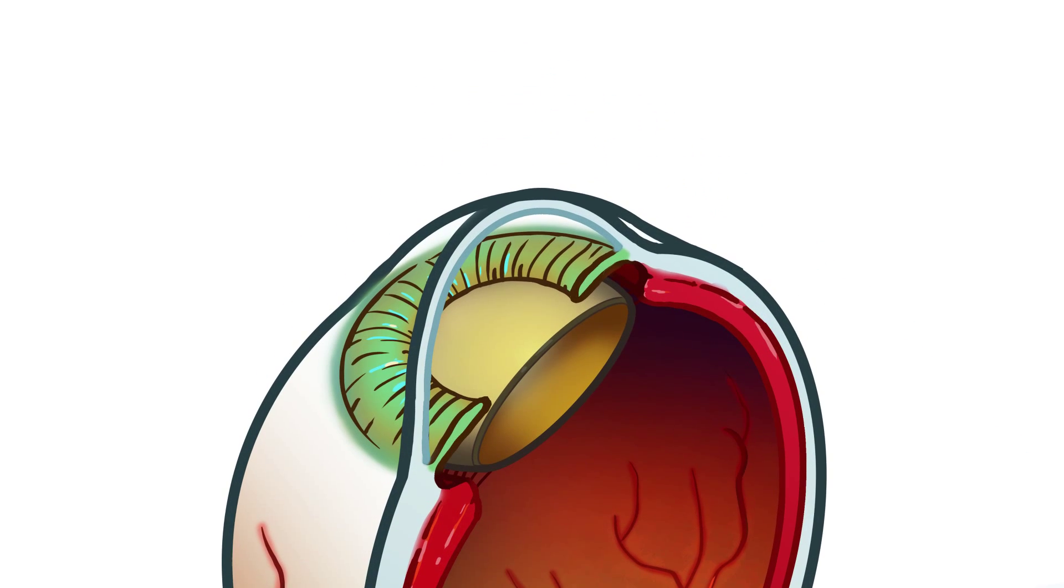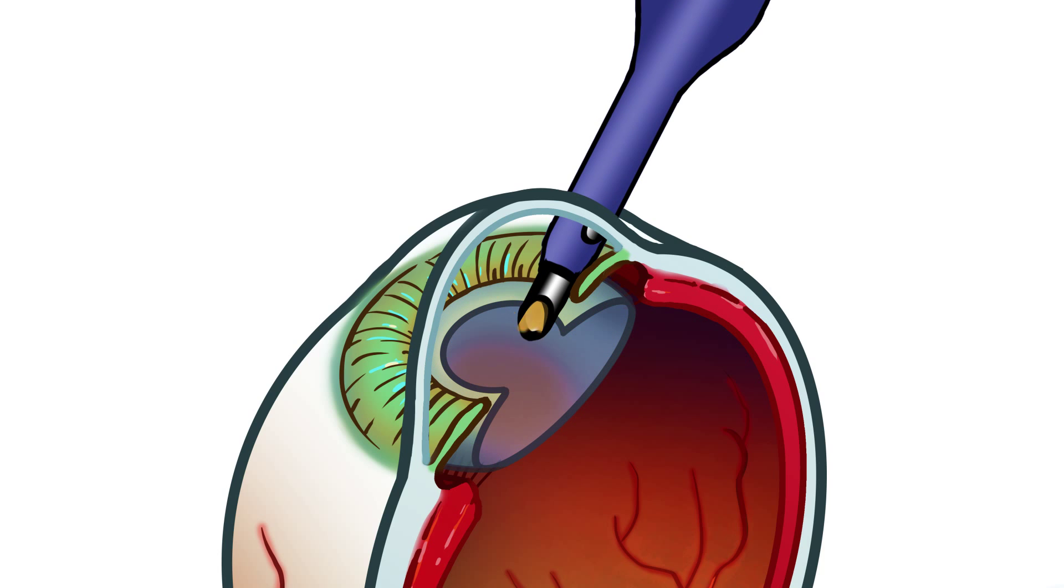Next, the laser creates a circular opening in the thin capsule surrounding the cataract, and proceeds to gently break up the cataract inside the eye, making removal easier and safer. Once the cataract has been removed,